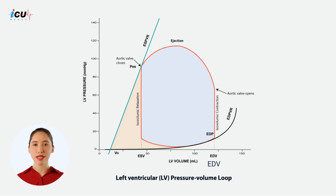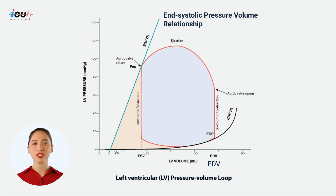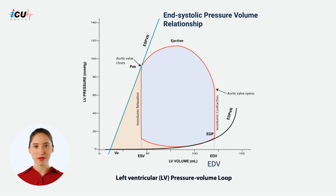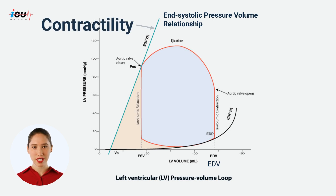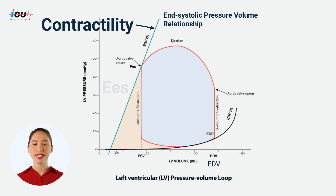The end systolic pressure volume relationship represents the maximal pressure developed by the LV at any given volume at end of systole, and is a measure of cardiac contractility. The slope of ESPVR, also referred to as EEs,